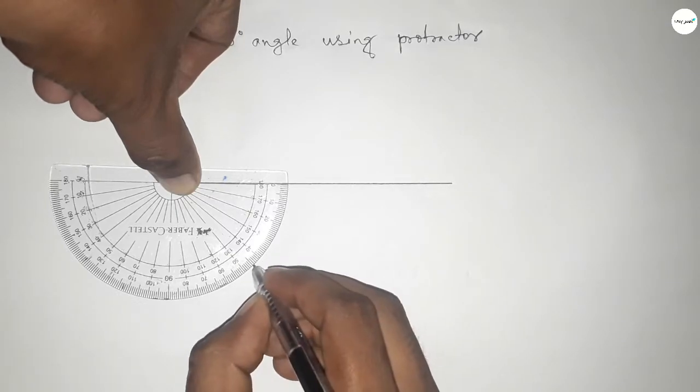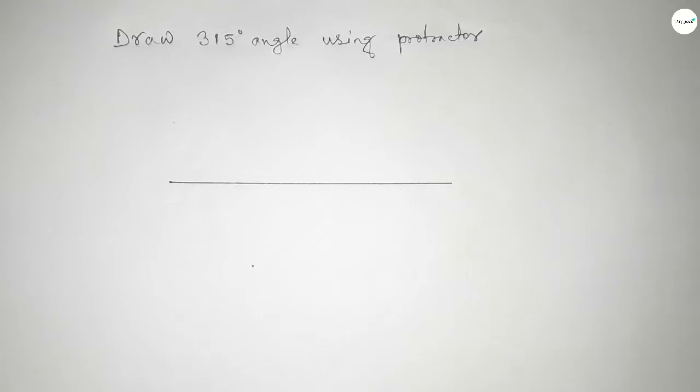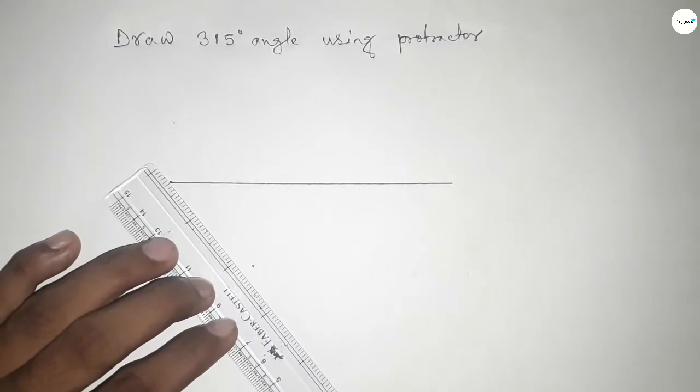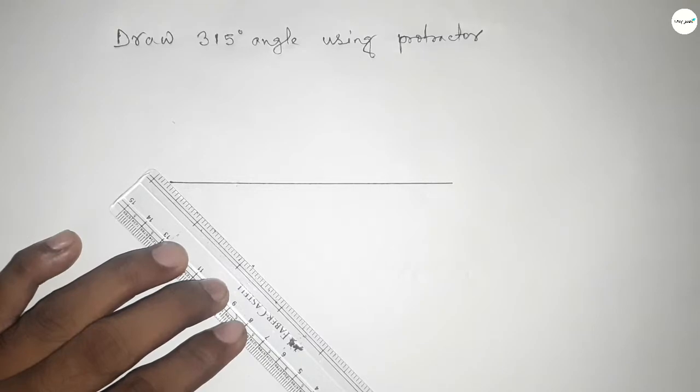135 degrees with 180 degrees, then we can get 315 degrees. So now joining this to get a 315-degree angle.